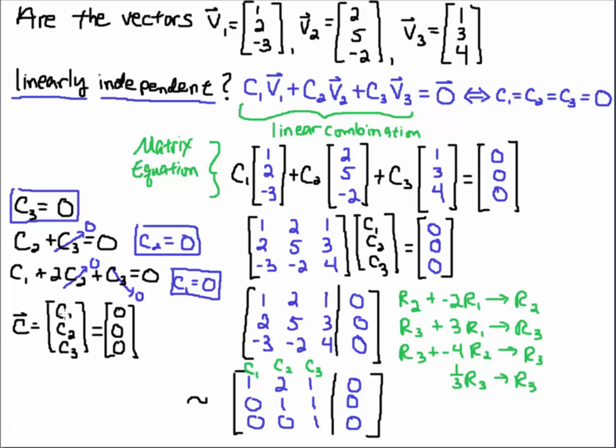So the unique solution to this system is C1, C2, C3 equals [0, 0, 0]. So the C vector here is equal to the 0 vector. So since C1, C2, C3 are all equal to 0, that is a unique solution to the system, we claim that V1, V2, V3 are linearly independent.